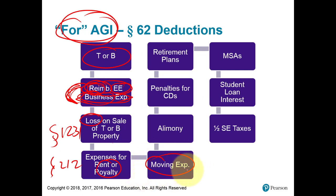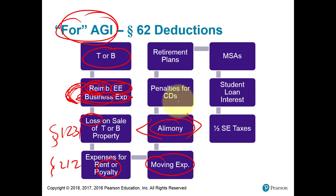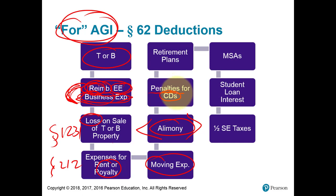Moving expenses is a for-AGI deduction. Alimony: whoever receives it has to report income and whoever pays it gets to claim a for-AGI deduction. If you purchase a certificate of deposit and take out the money early, the bank may charge you a penalty. That penalty can be claimed as a deduction and will show up on the 1099-INT form that reports interest income, along with the early withdrawal penalty, as a for-AGI deduction.